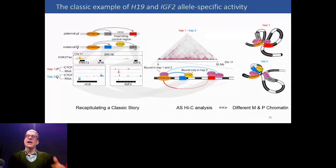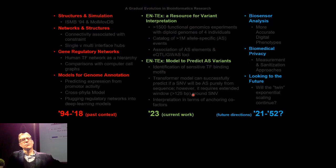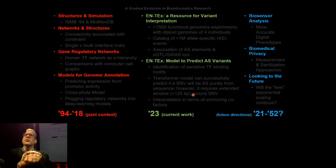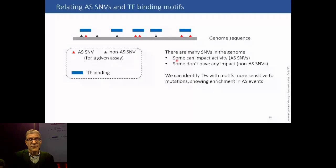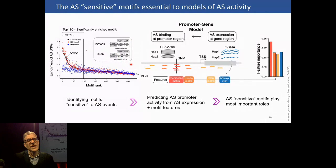Now I'm going to tell you a little bit about what we did with it — modeling this allele-specific activity. We have this big catalog of allele-specific variants, and we asked: what are they associated with? You can look at whether these allele-specific variants are associated with particular types of transcription factor binding, or if they fall in the motifs for a particular transcription factor. You can rank all the transcription factors in terms of how enriched they are in allele-specific variants. Some factors like FOXO3 are very enriched in allelic events, whereas others like DLX5 are not. We call these sensitive sites and sensitive TFs.